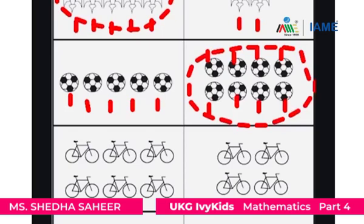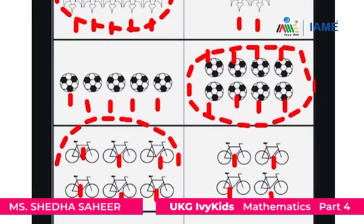Now let's count the bicycles. One, two, three, four. Let's count the other group: one, two, three, four, five, six. So this group is having more bicycles and we will circle that. Let's count the cars: one, two. What about the second group? One, two, three, four. So this group is having more cars and we will circle that.